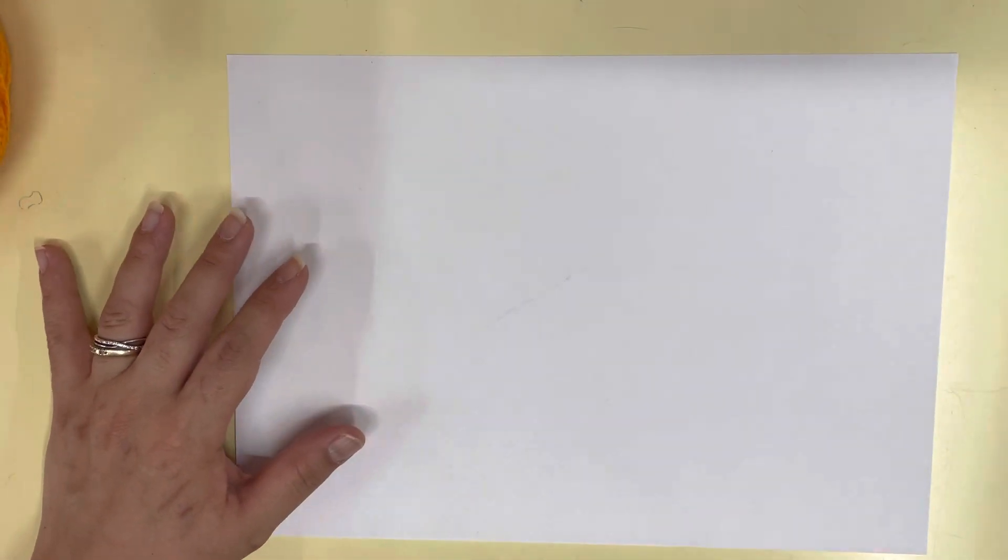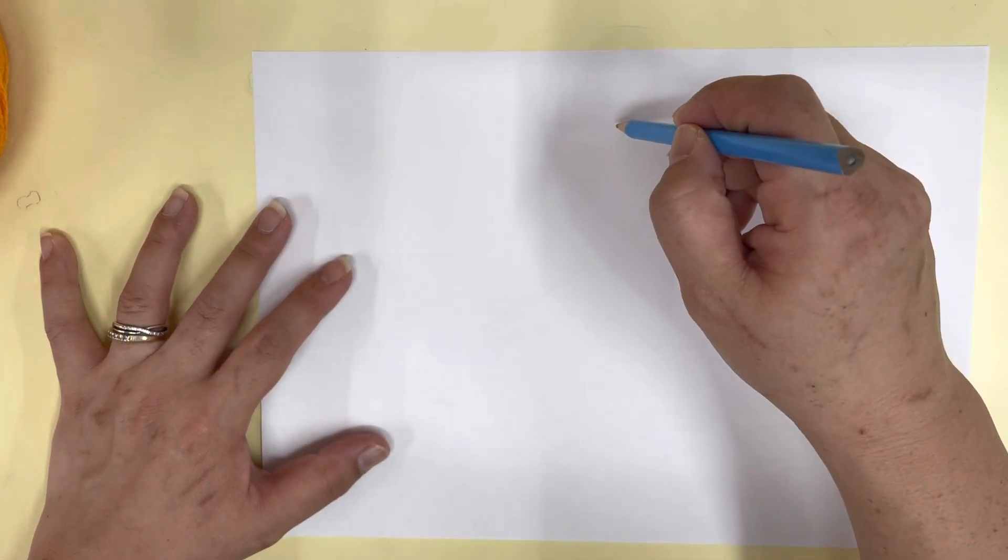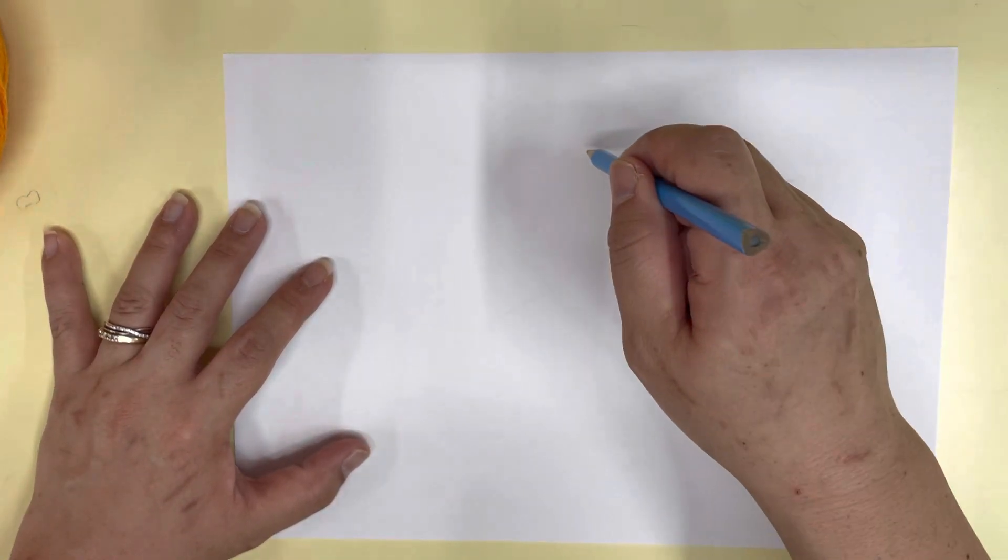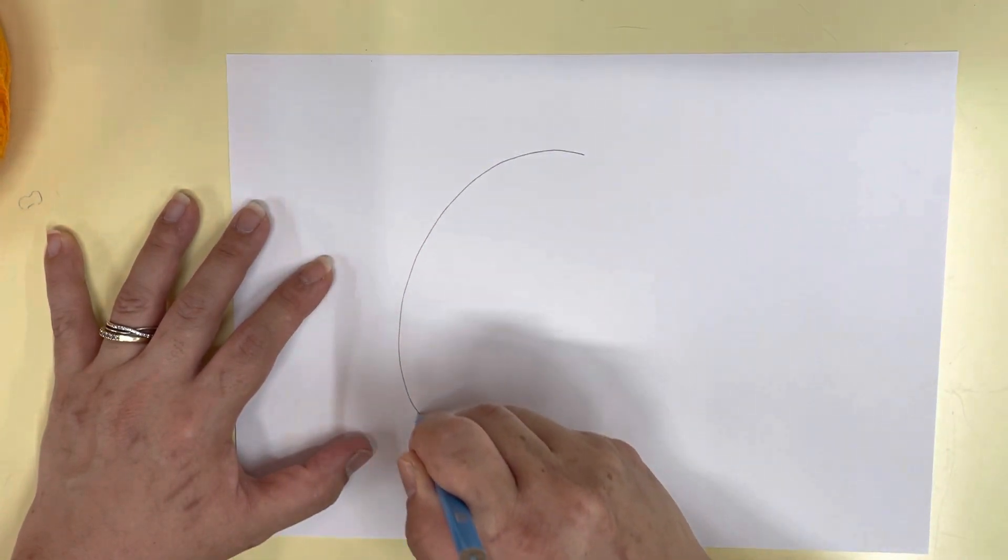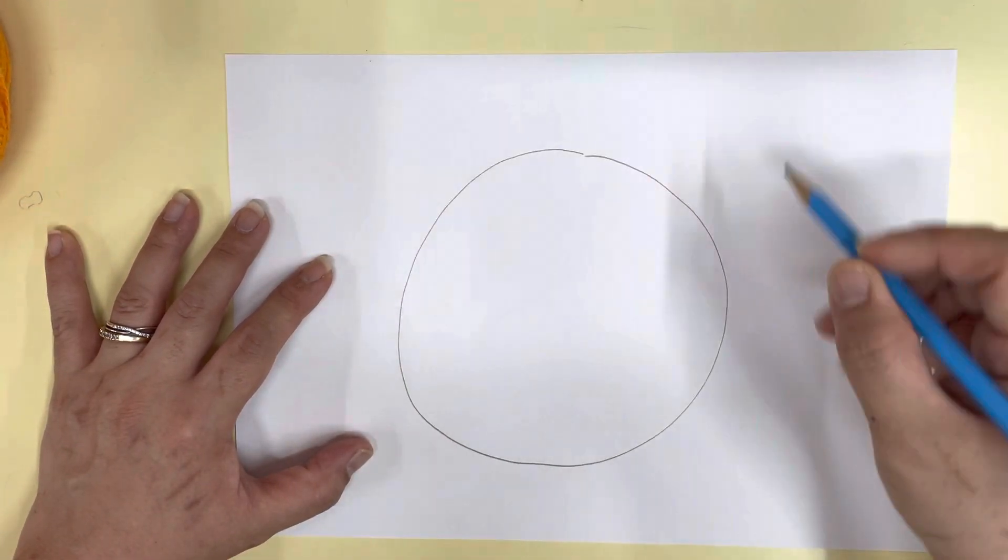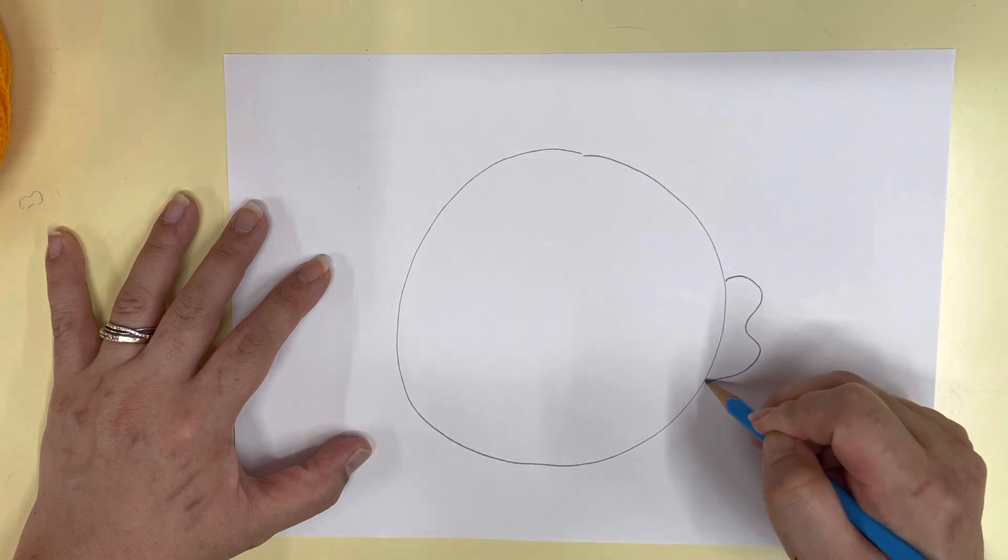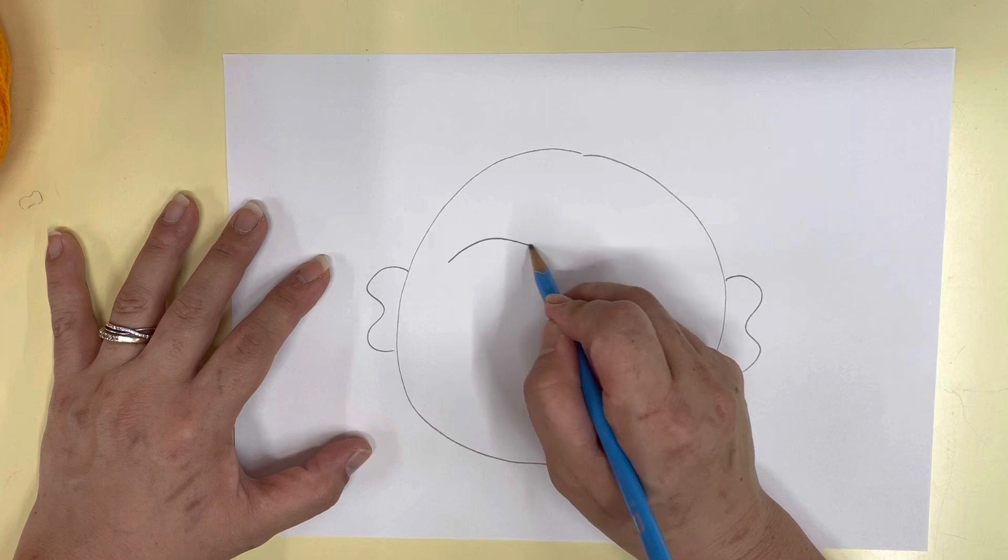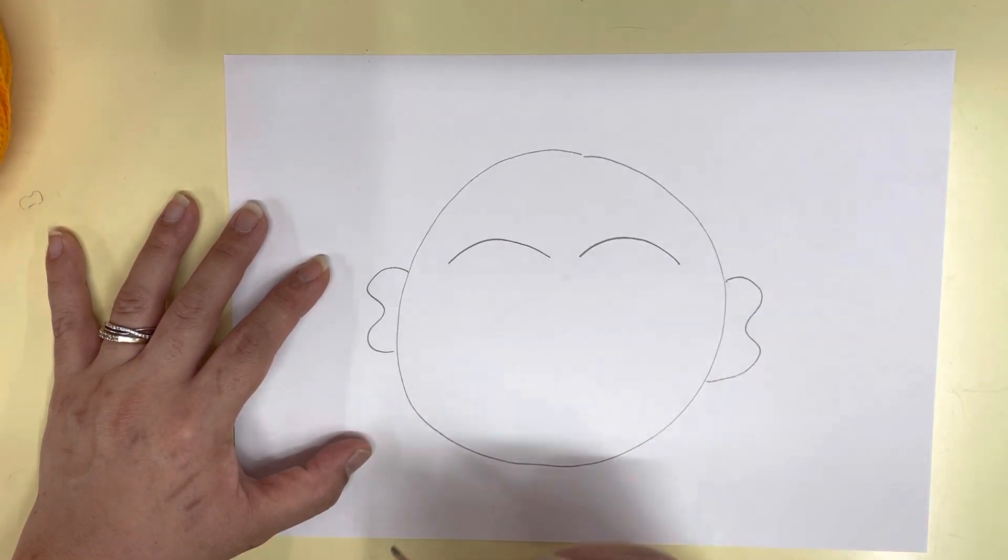All right, so let's start. Let's start with drawing our face. So let's just do a simple face. I'm going to draw a circle for my face, then I'm going to draw some ears.